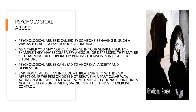Emotional abuse can include threatening to withdraw affection if the person does not behave in a particular way, which can be seen in domestic violence. It could involve acting in an inconsistent way — sometimes being very affectionate and loving, and sometimes very aggressive, nasty, name calling, or putting them down. They could make threats of punishment or say hurtful things to exercise control in very coercive relationships. This can be just as detrimental as physical or sexual abuse.